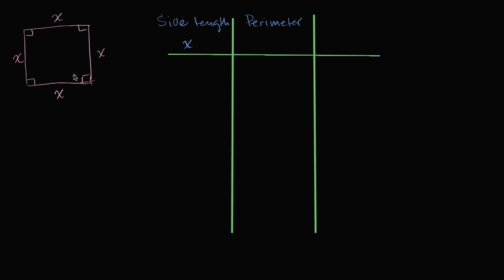The perimeter is going to be x plus x plus x plus x, which is, of course, 4x. And then I want to think about the ratio — the ratio between perimeter and side length.